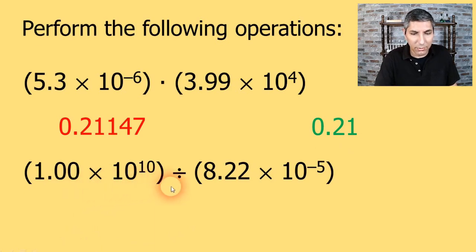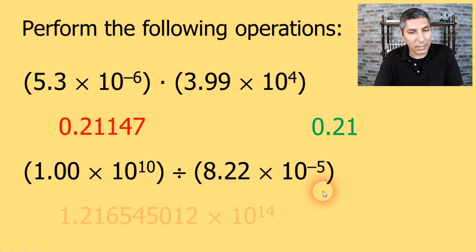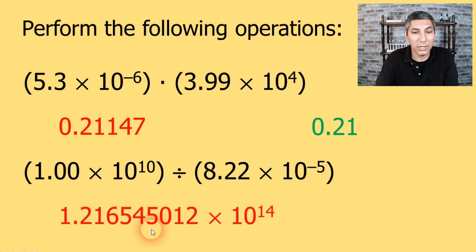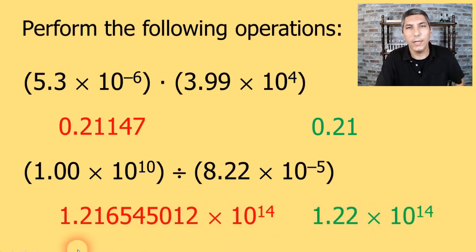How about this next problem? 1.00 times 10 to the 10th, divided by 8.22 times 10 to the negative fifth. Try typing that problem into your calculator. And if you did this correctly, you should get this popping up on your screen or something equivalent to that: 1.216545012 times 10 to the 14th. Now, even though that appears on your calculator screen, you don't want to express all those numbers because obviously, that's way too many figures to express. How many significant figures? Should be three, because we have three significant figures in the first number, three significant figures in the second number. So when we round this off, it should be 1.22 times 10 to the 14th. Get in the habit of expressing your answers with the correct number of significant figures.